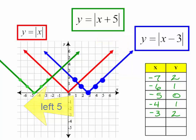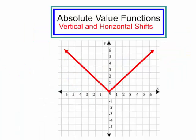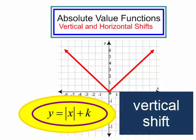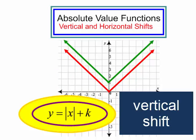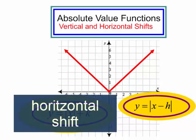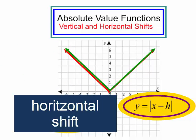You have to be very careful with the horizontal shifts and the signs. In this video, we talked about vertical and horizontal shifts. y equals the absolute value of x plus k is a vertical shift — it will send my function up or down. y equals the absolute value of x minus h is a horizontal shift, and it will send my function right or left.